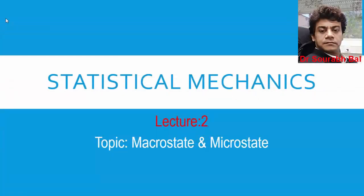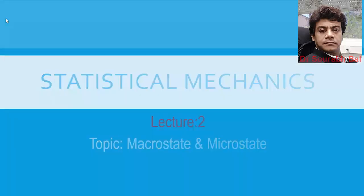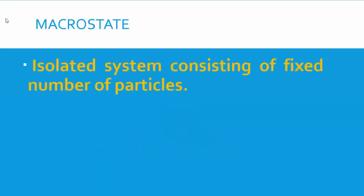We come to Lecture 2, and for Lecture 2 we have the topic macrostate and microstate. In Lecture 1 we covered the difference between the three statistics: Maxwell-Boltzmann statistics, Bose-Einstein statistics, and Fermi-Dirac statistics. Now in this lecture we are going to discuss two important concepts from statistical mechanics: macrostate and microstate.